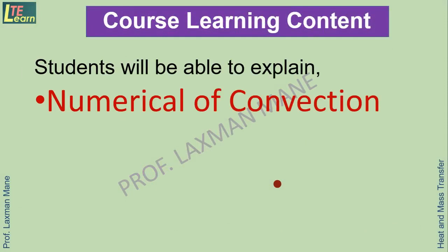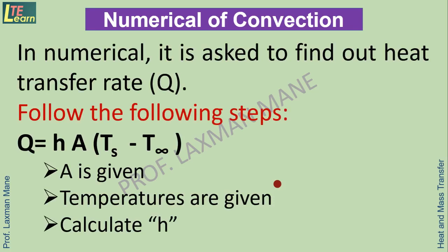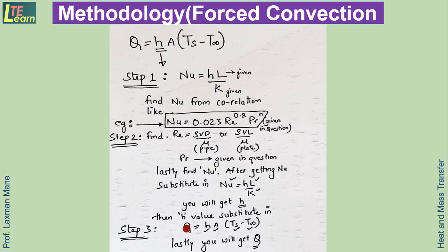In numericals of convection, it is asked to find out the heat transfer rate Q. The formula is Q = H × A × temperature difference. Area and temperatures are given, so we need to calculate the heat transfer coefficient H for convection.